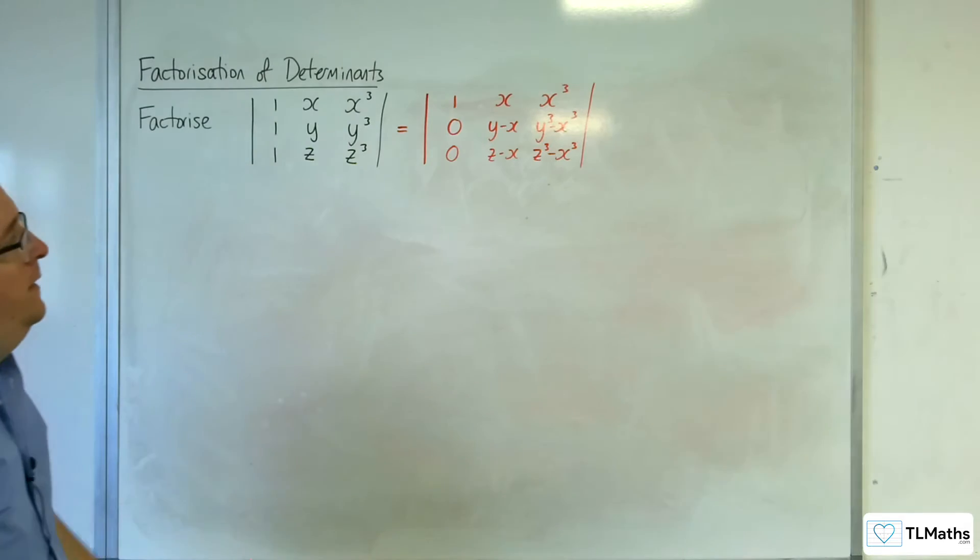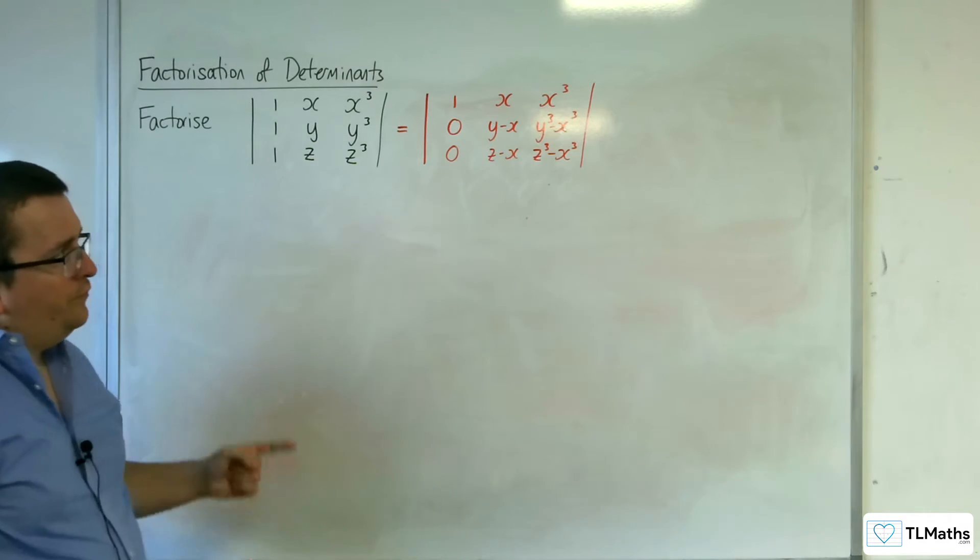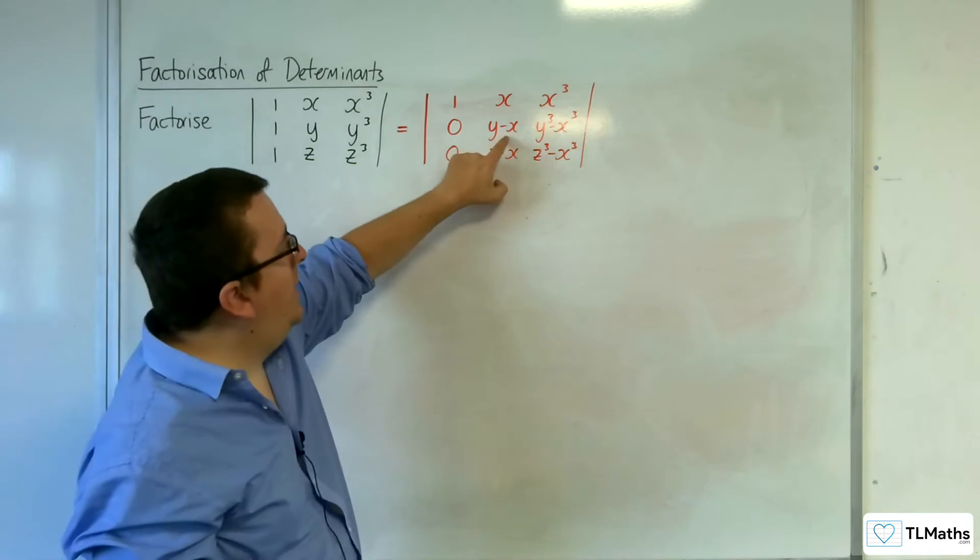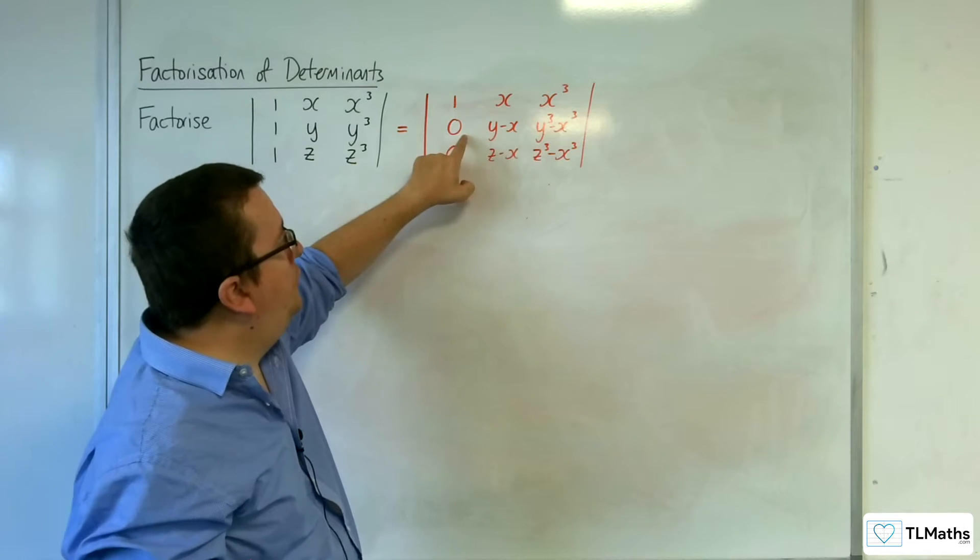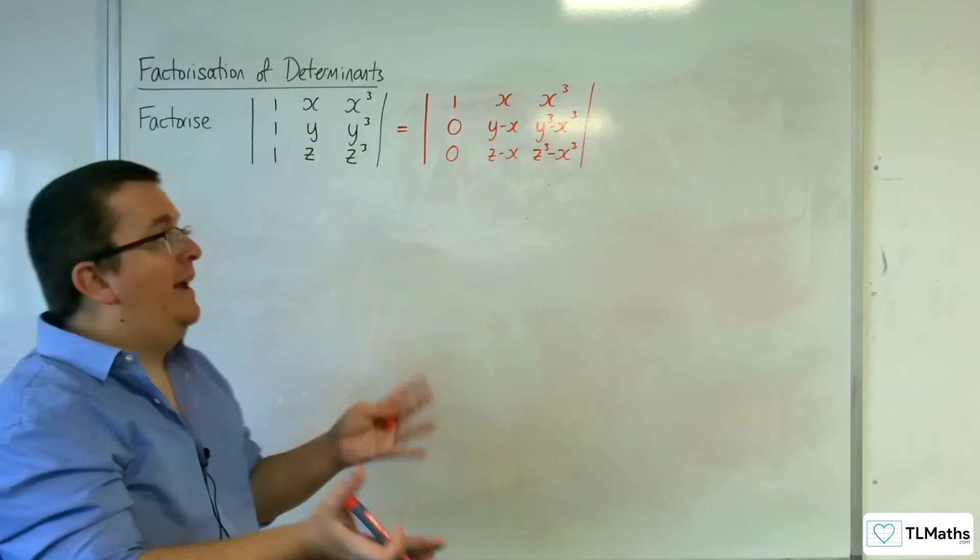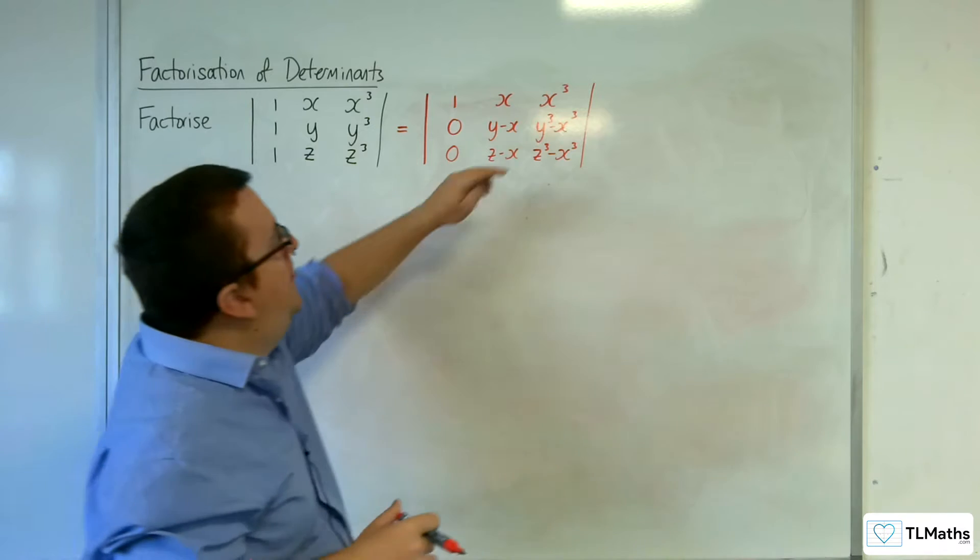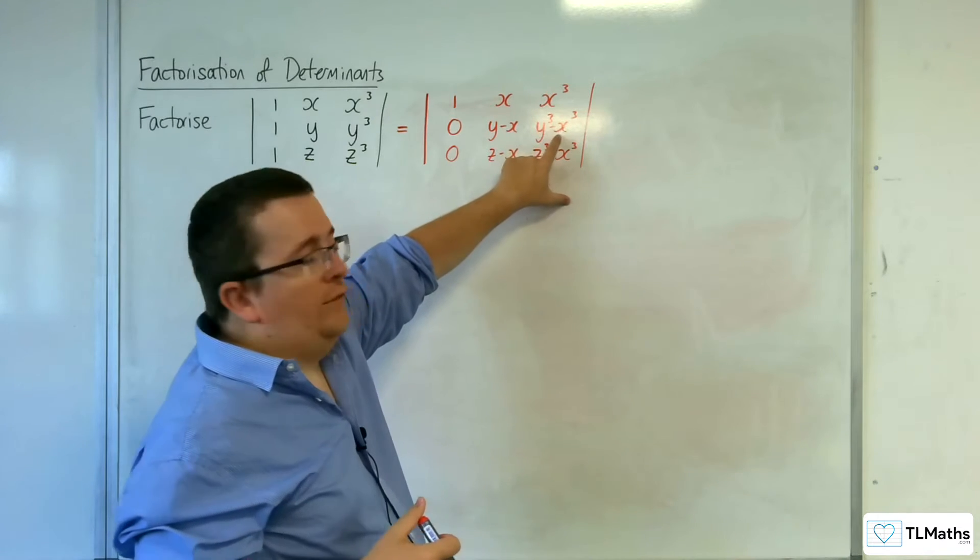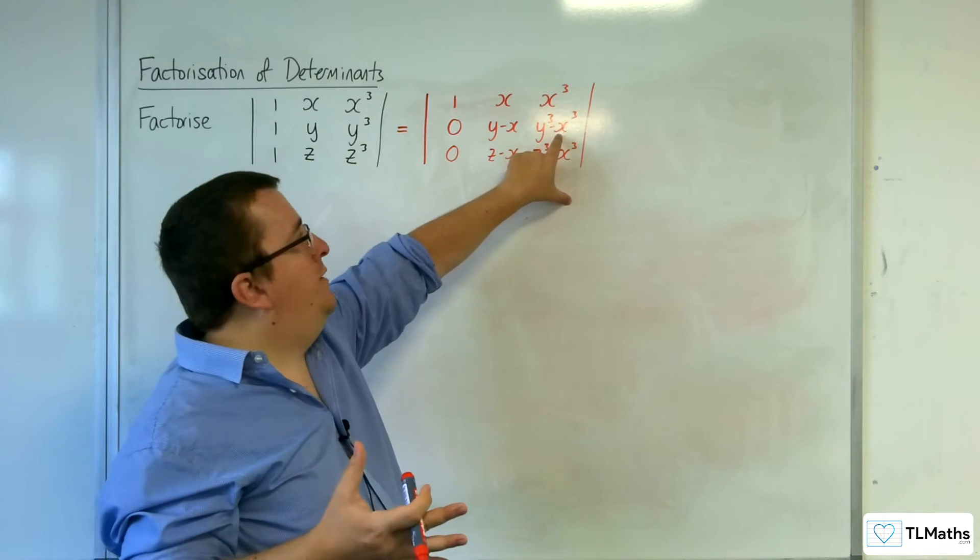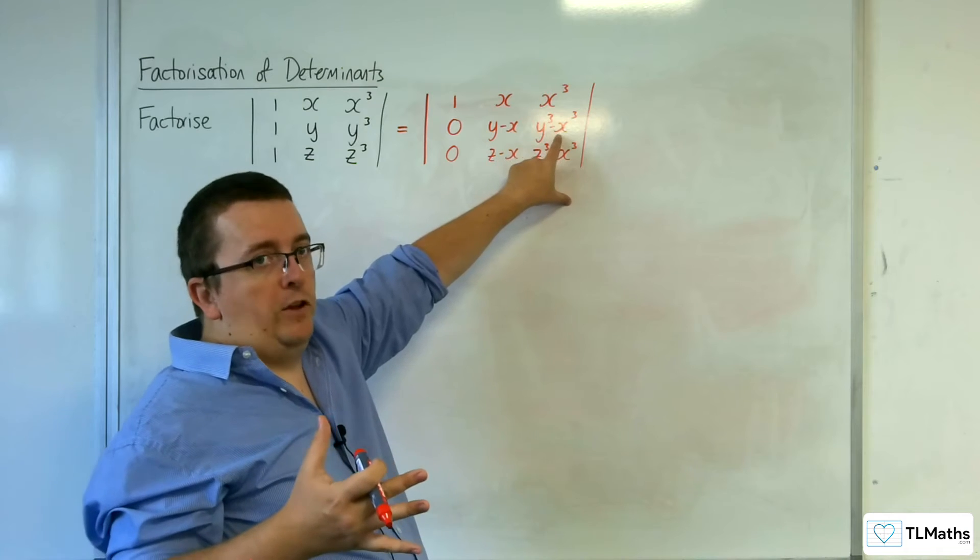Now, the next stage, because you've got the y take away x here, the 0 is fine, so I can factor y take away x out of that if I need to, that's fine. The thing is, can I factor out y take away x from y cubed take away x cubed?